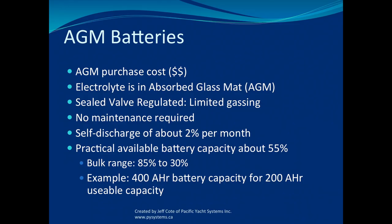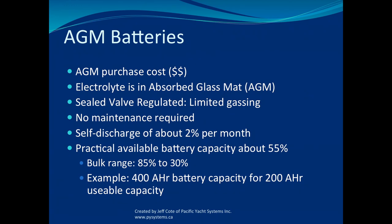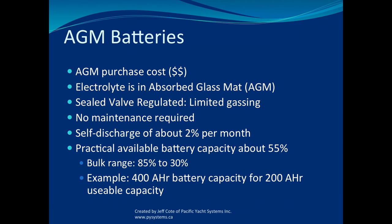AGM — absorbed glass mat — batteries are really the two big choices in the marine world right now: AGM or flooded. Lithium is a player but requires money and commitment. With AGM, the electrolyte is in a glass mat so it can't leak. Very limited gassing, maintenance-free — no top-off required, no electrolyte to add. Self-discharge is very low, similar to gel, because it's also a sealed valve regulated battery. Capacity is similar to gel at 55%, so you can get away with only a 400 amp hour battery bank to get 200 amp hours usable.